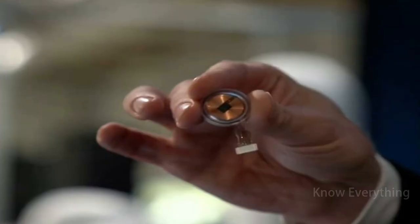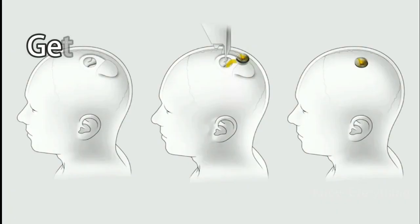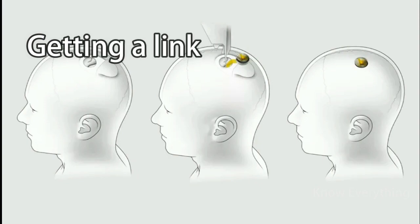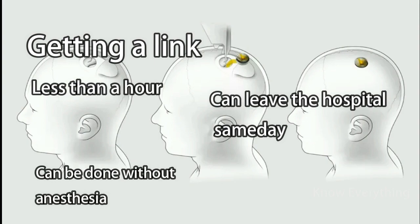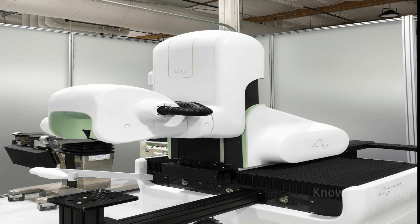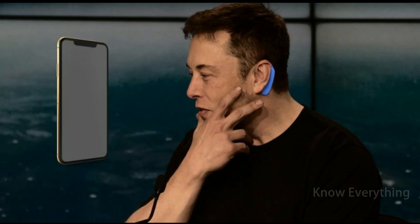The device is called the Link V0.9. The link is placed inside the skull through a clinical surgical operation. In this setup, we have electronic devices like this, and they are used to control the brain.